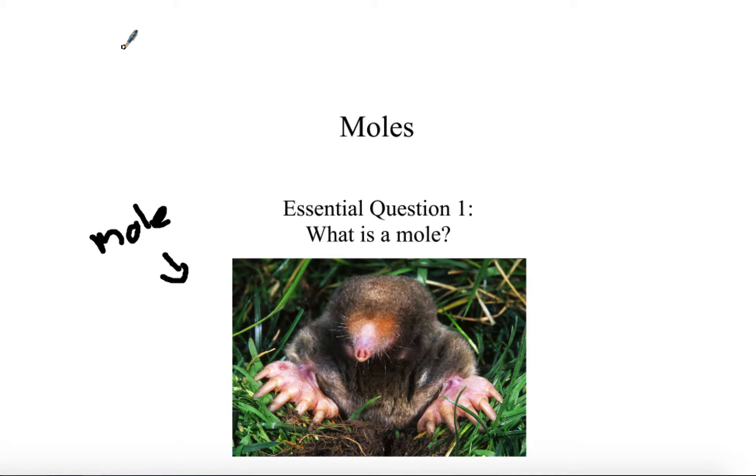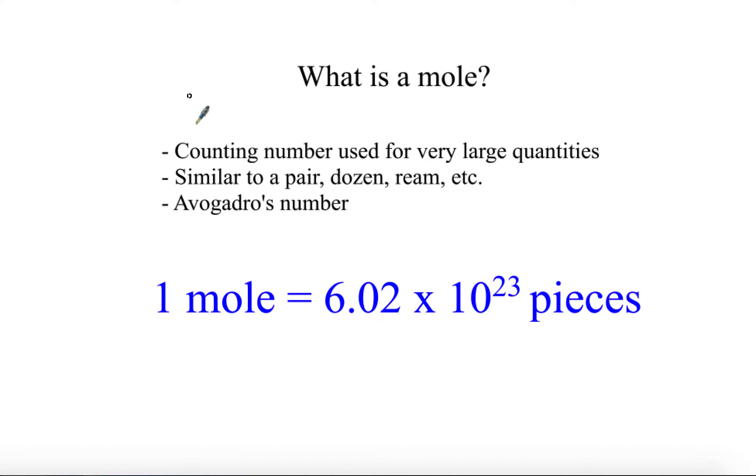We're going to talk about a different type, a much less adorable one that we use in chemistry. The mole is actually a counting number - it is not an animal, it's a number. The mole is similar to what a pair, dozen, or ream represents, where one pair represents 2 of something, one dozen represents 12, and a ream is 500.